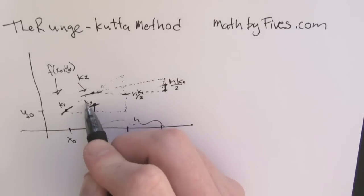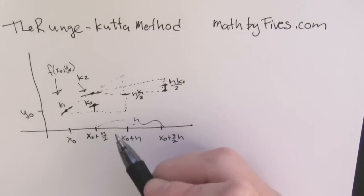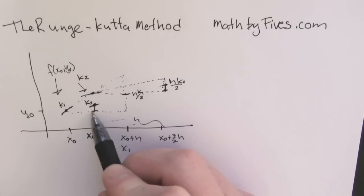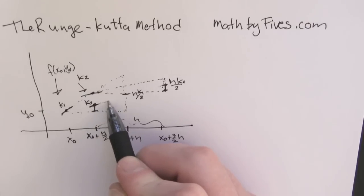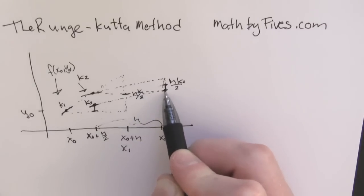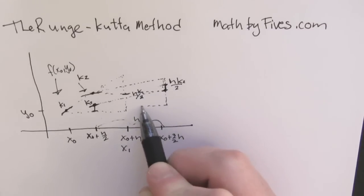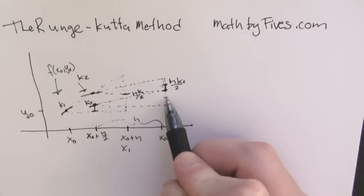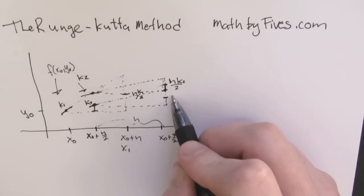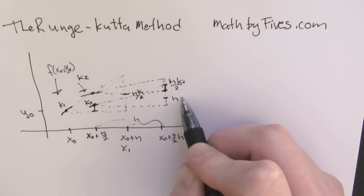Great. So now that k3 is going to be projected h far away, and that's going to give him a h times, or a new height using k3's slope if you go h far away. And if we take that new height using k3 slope, and we put it on top of our new point x1, this is going to give us the fourth slope in our approximation.